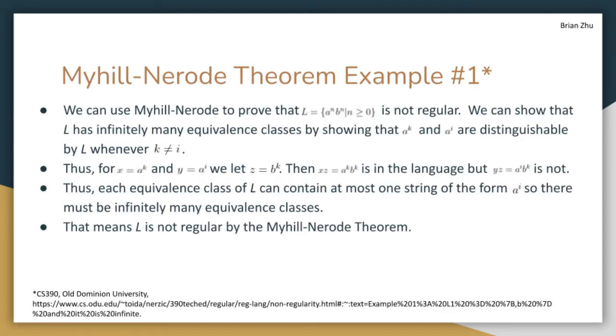We can use the Myhill-Nerode theorem to prove that the language L equal to a^n b^n, where n is greater than 0, is not regular. We can show that L has infinitely many equivalence classes by showing that a^k and a^i are distinguishable by L whenever k is not equal to i. Thus, for x where x equals a^k and y is equal to a^i, and we let z equal to b^k, then xz is in the language of L, but yz is not.